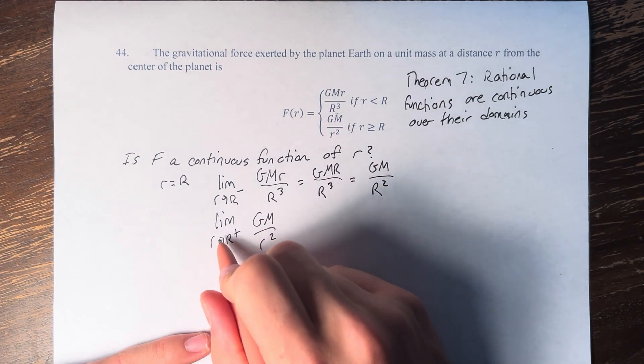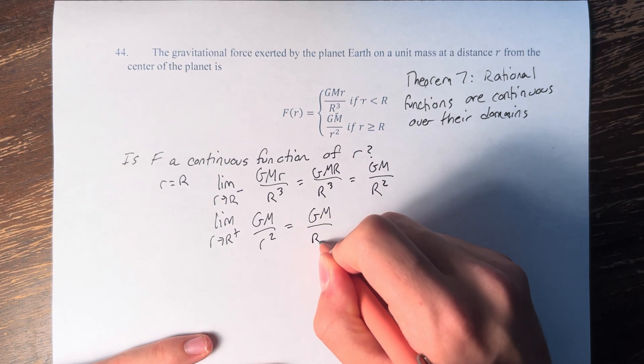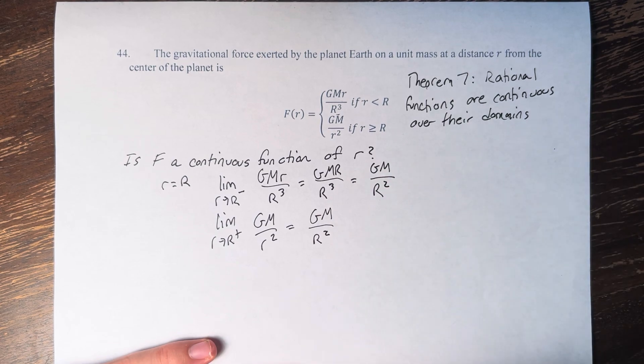And what we have to do here is simply, again, plug in big R for little r to get GM over R squared. And we can see that the limit from the left and the right both equal GM over R squared.